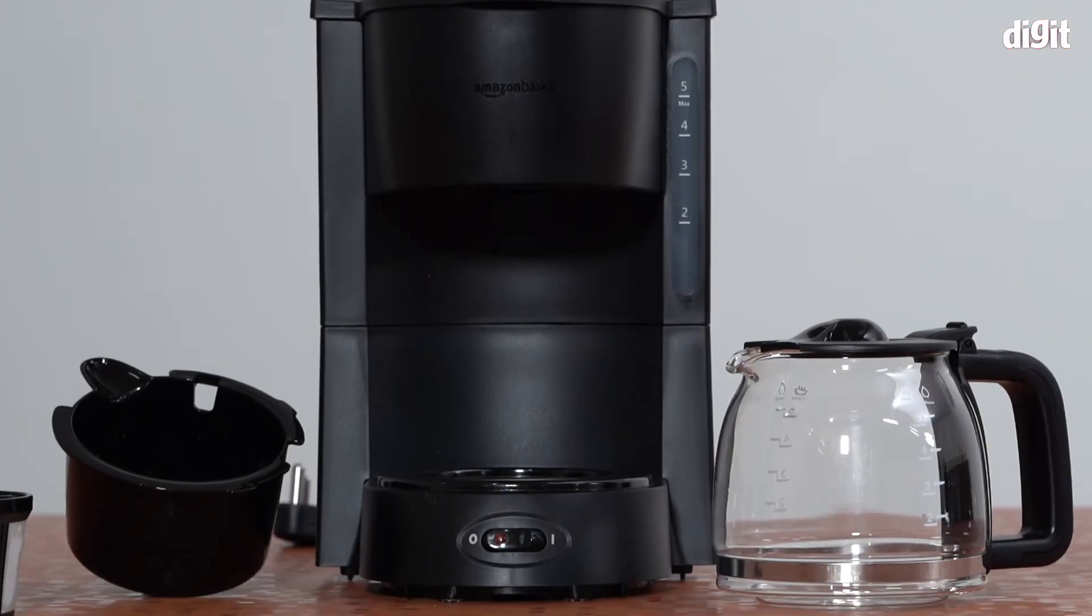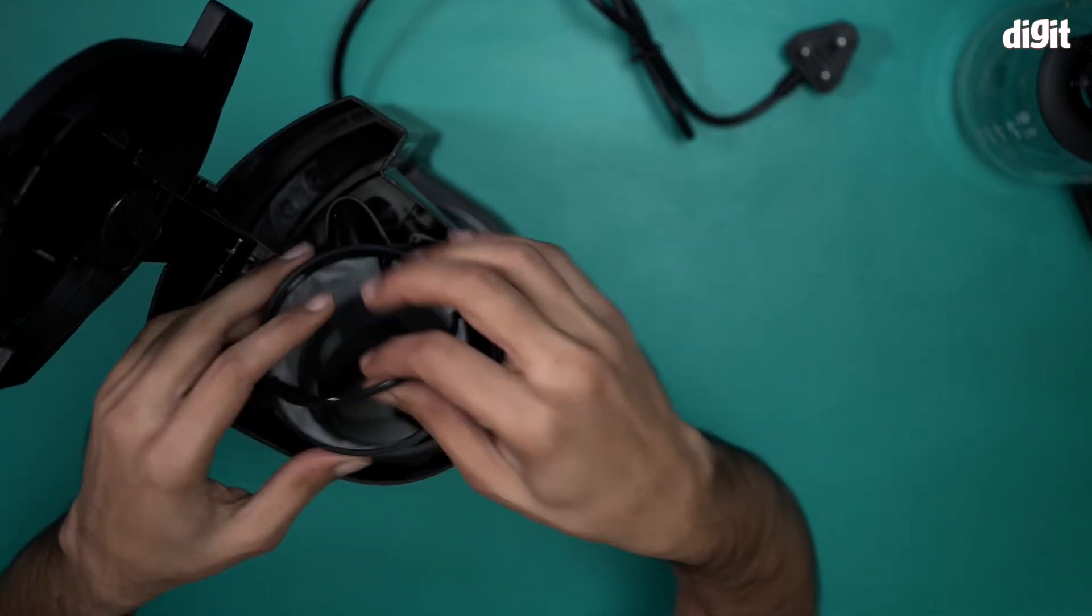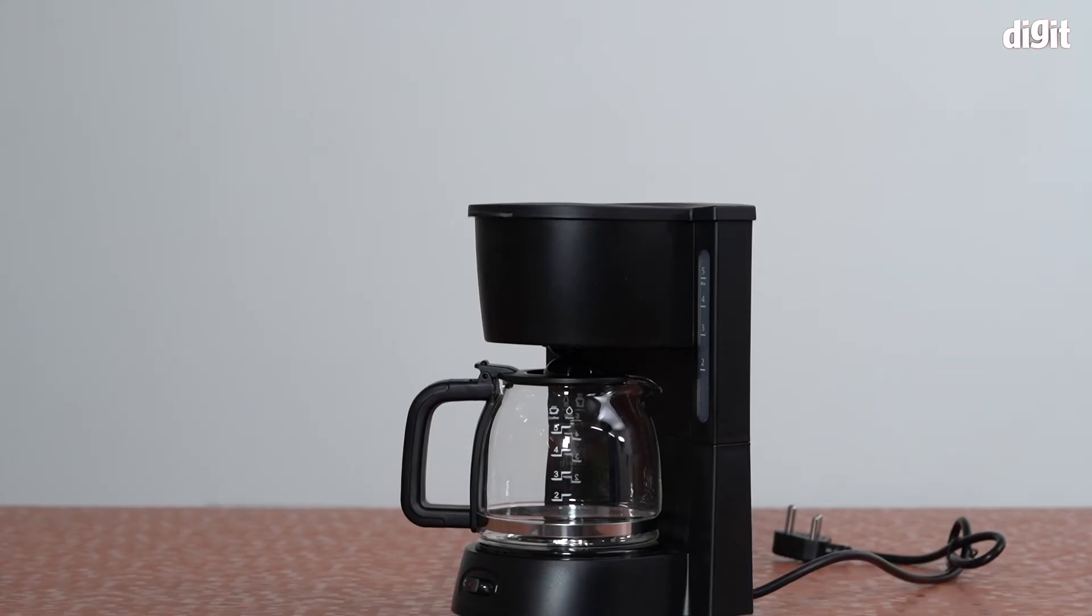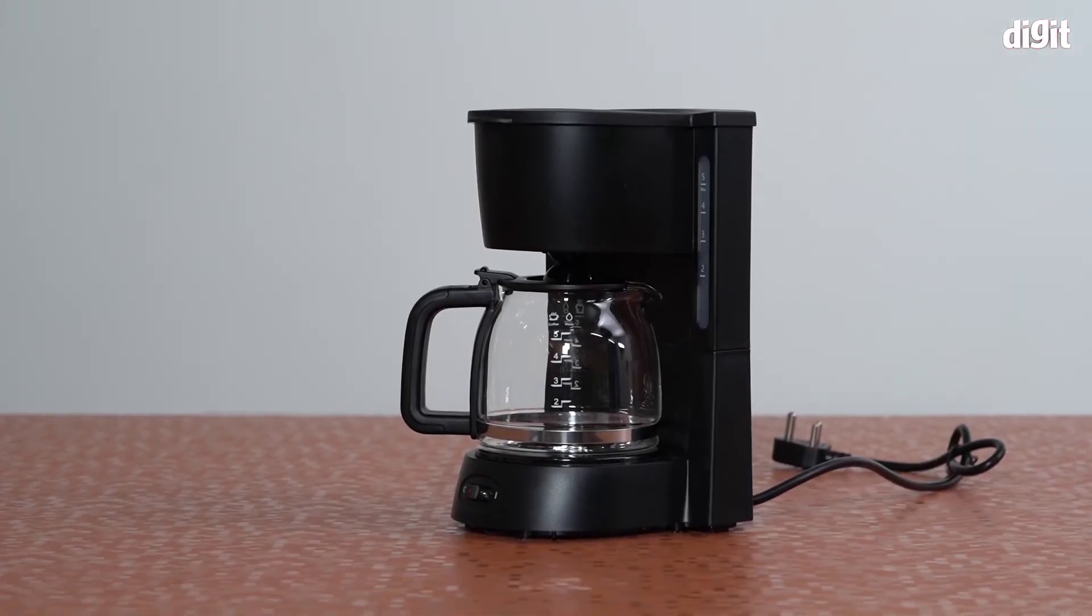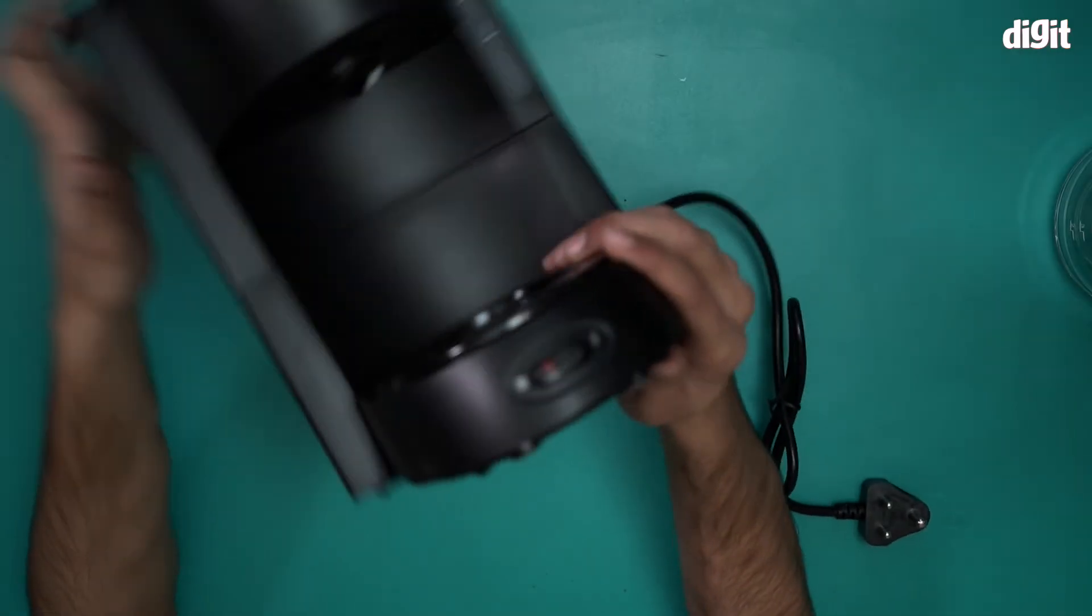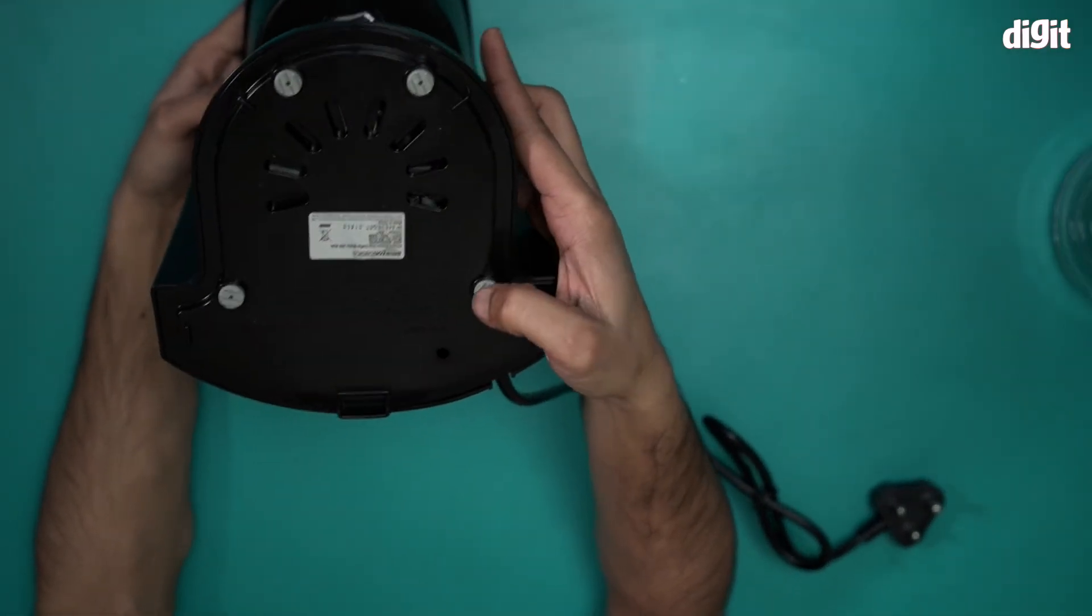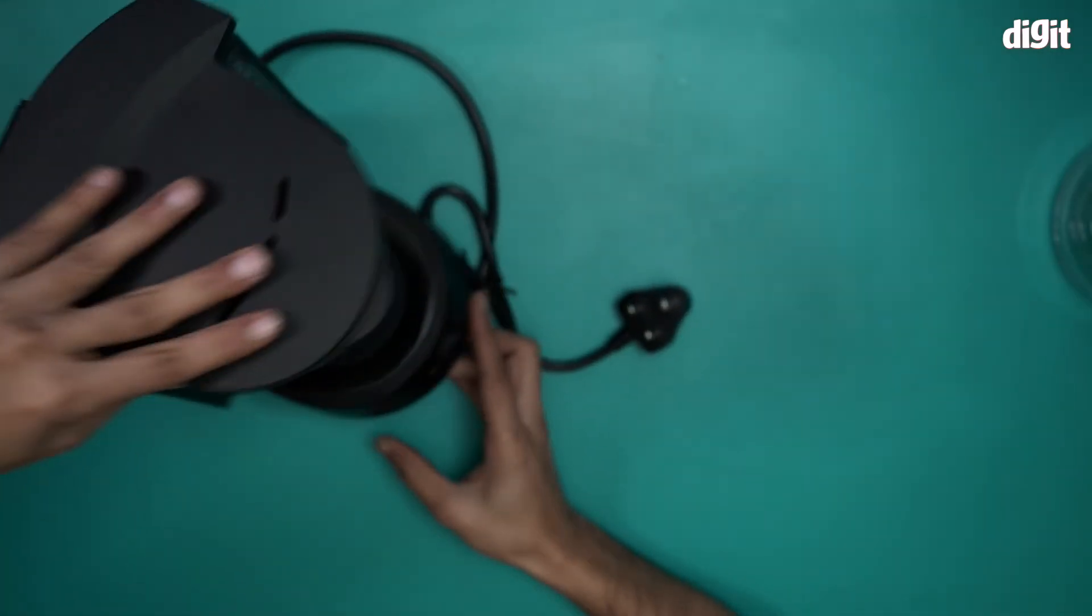The water goes in over here, followed by the coffee in this, and then basically you're good to go. One final thing, there's also four anti-slip rubber stops underneath. This gives this machine quite a bit of stability.